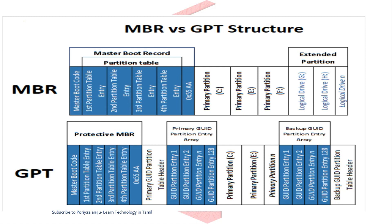In MBR — the Master Boot Record — the complete partition structure is stored in the very first sector of the hard drive, which is 512 bytes. When the system boots, it reads the Master Boot Record to find the bootloader information and boots the OS. The MBR also contains the partition table, which stores partition location information.